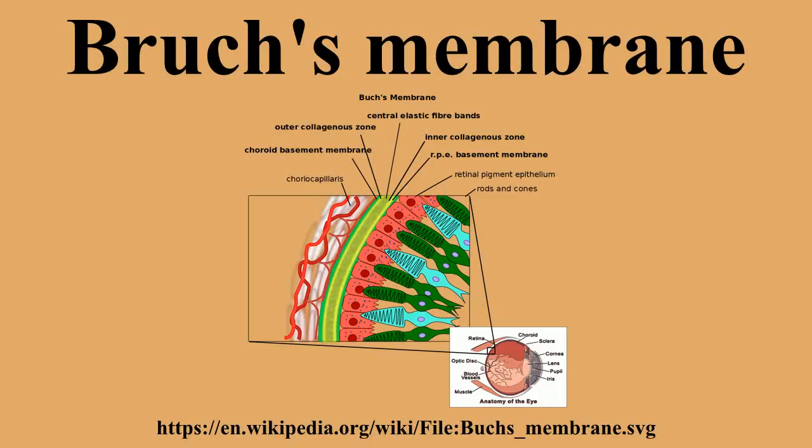Bruch's membrane is the innermost layer of the choroid. It is also called the vitreous lamina, because of its glassy microscopic appearance. It is 2 to 4 micrometers thick.